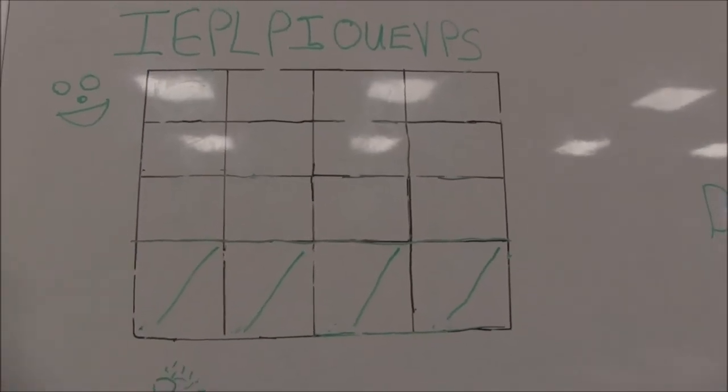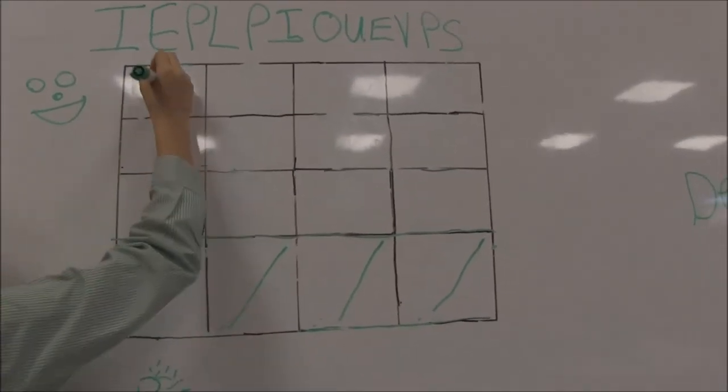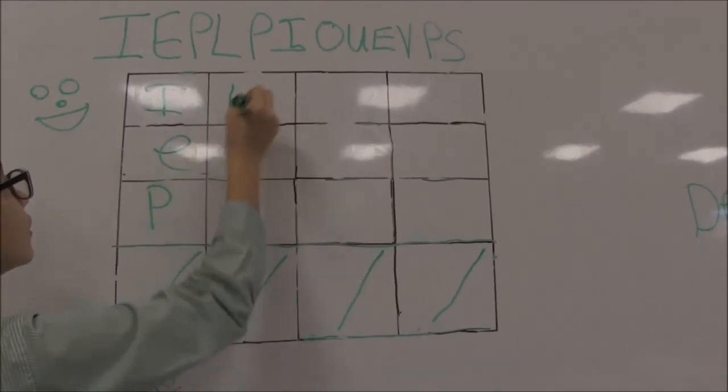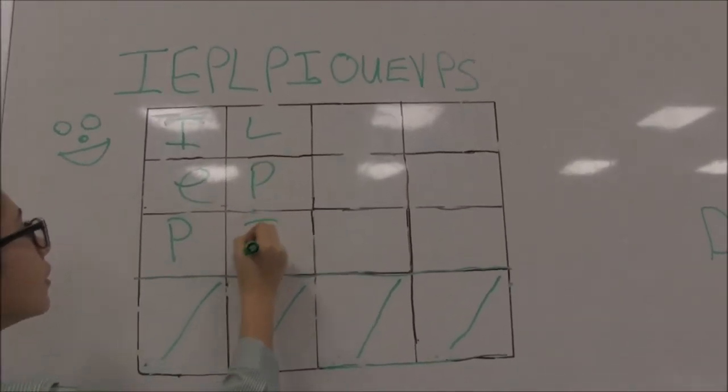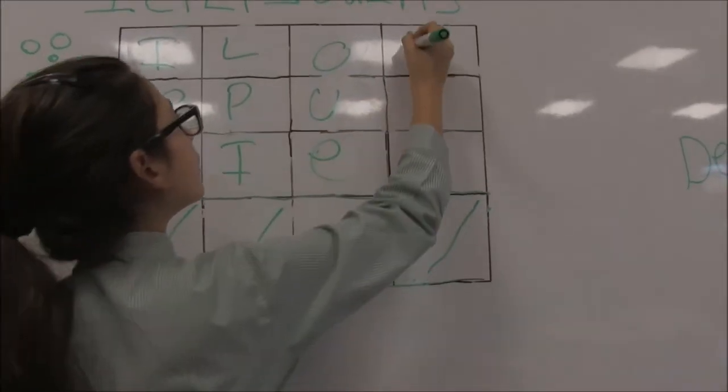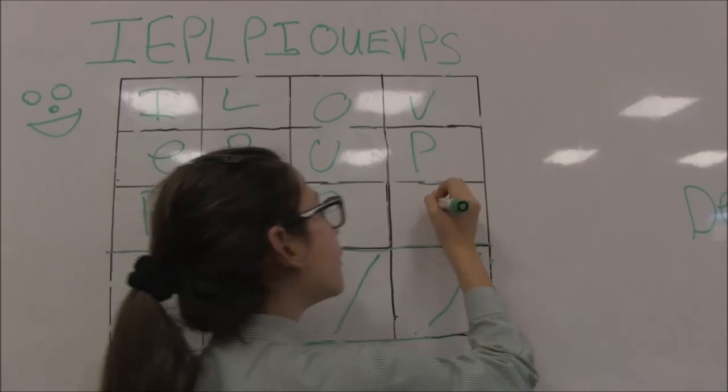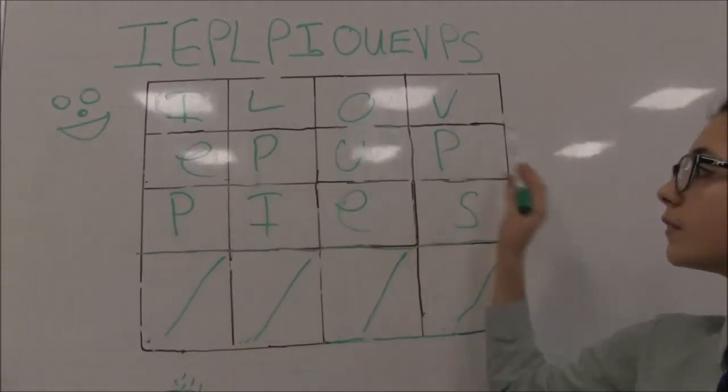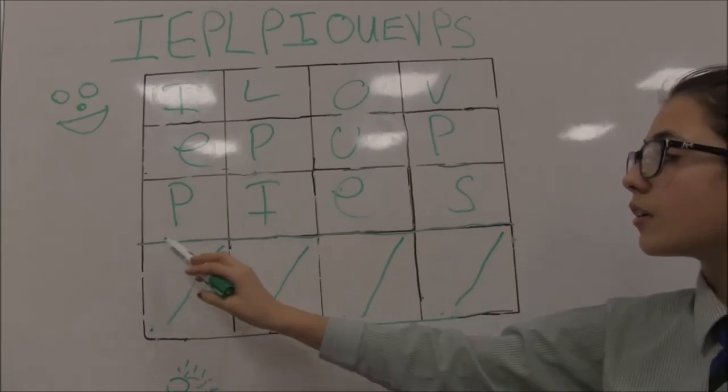Write each letter of your code into the grid vertically. You should not be able to say your word or phrase easily. Our code is I love puppies.